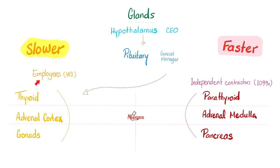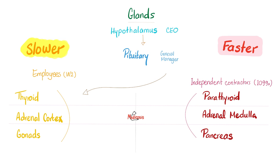That was the story of the employees that listened to the pituitary. How about the independent contractors? Parathyroid glands secrete parathyroid hormone. Adrenal medulla secretes catecholamines — like epinephrine, norepinephrine, and dopamine. Pancreas secretes insulin, glucagon, and somatostatin.